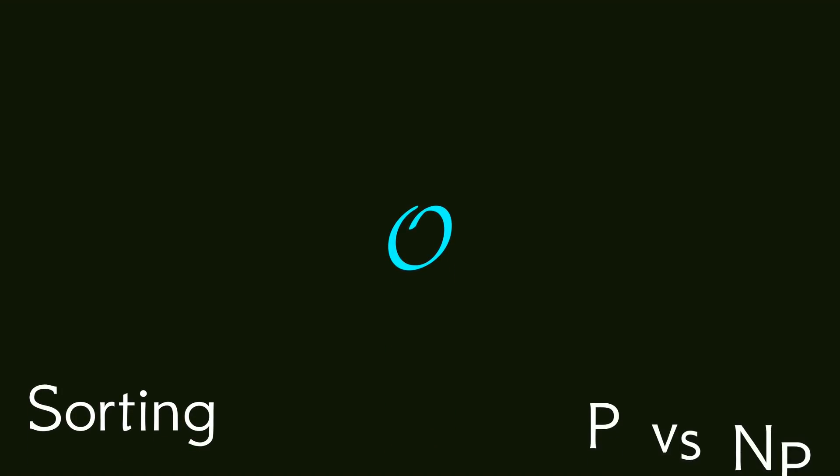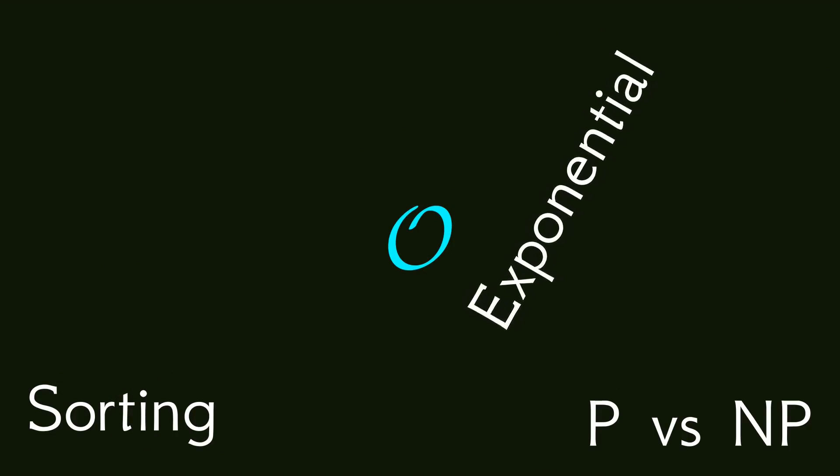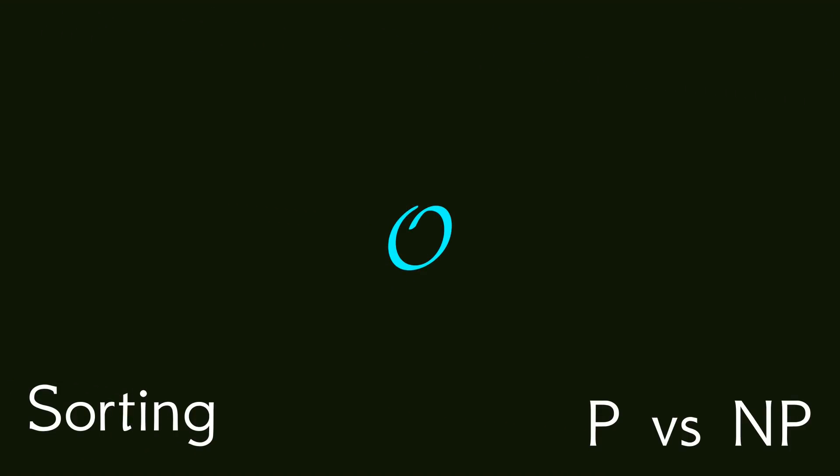You might have heard of big O notation, maybe in the context of sorting algorithms or p vs np. Often explanations of big O notation use fancy words like polynomial or exponential without explaining what they mean. So I want to take a stab at explaining big O notation using only basic arithmetic.